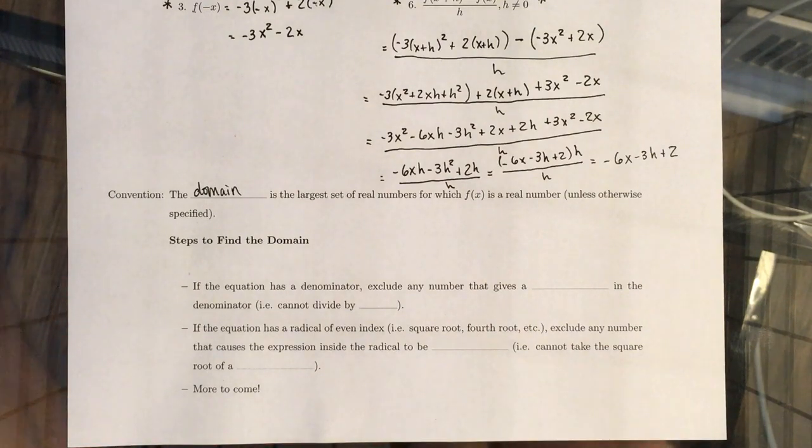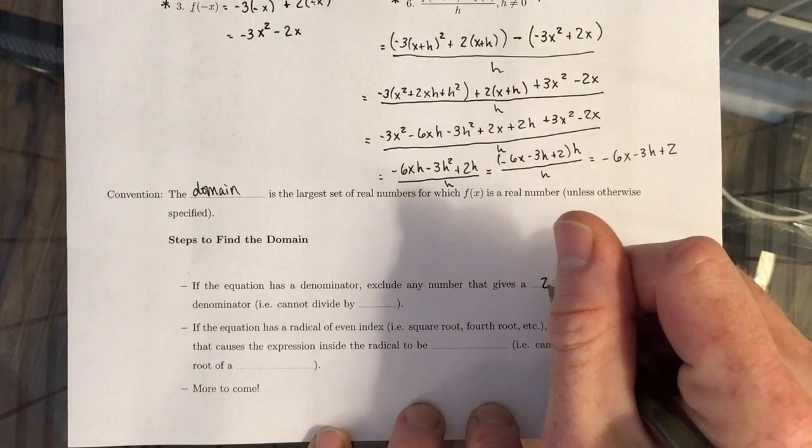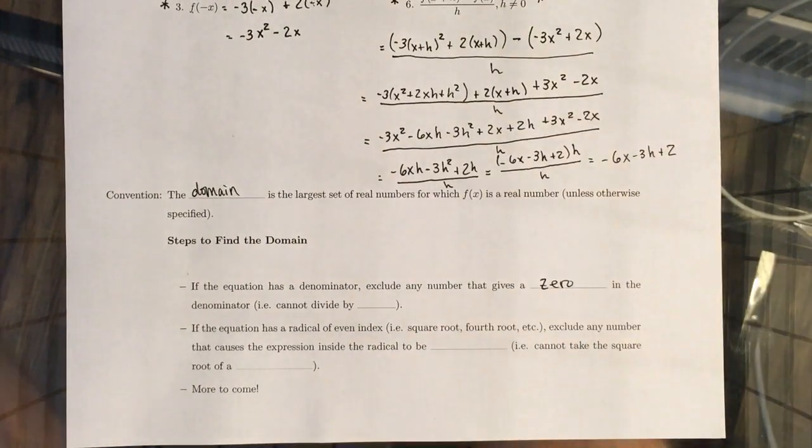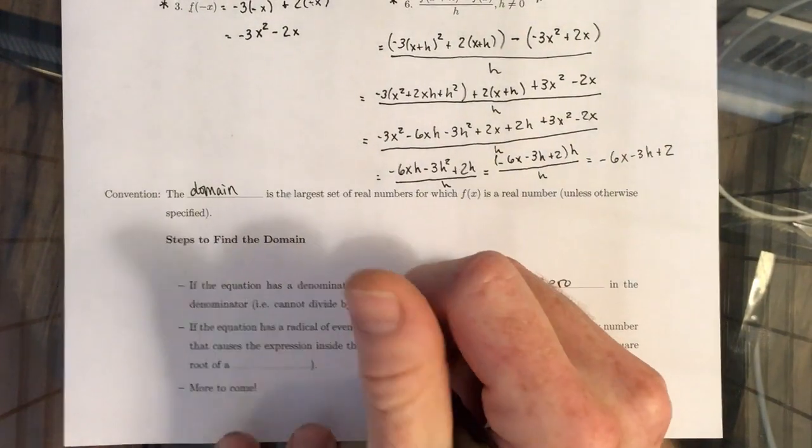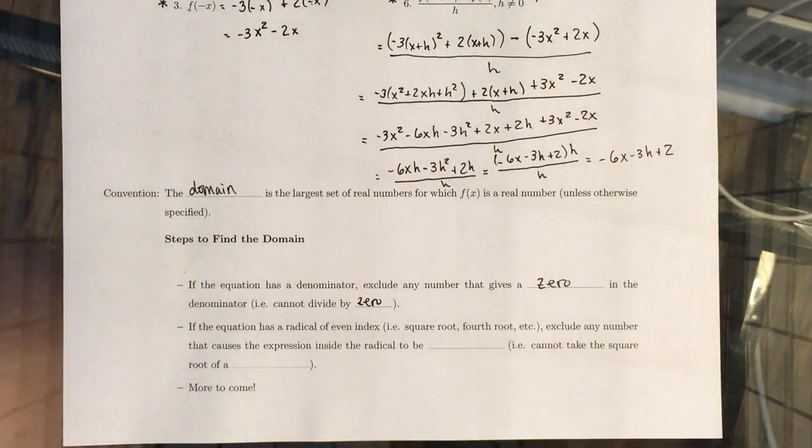First and foremost, thinking back to elementary school, we can't divide by zero. So if the equation has a denominator, we need to exclude any numbers that give a zero in the denominator, right? Because you can't divide by zero. Things go haywire if you do.